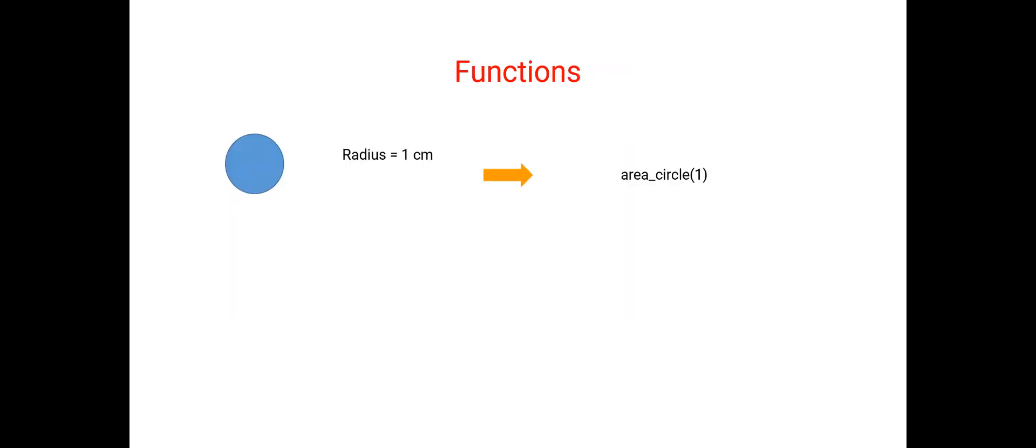Using the function that we have defined previously, which is this function area_circle, if you want to calculate the radius 1 cm circle area, you can just say area_circle and in the parentheses 1. For 3 cm, you can use 3 and so on. So you can do this for any radius.